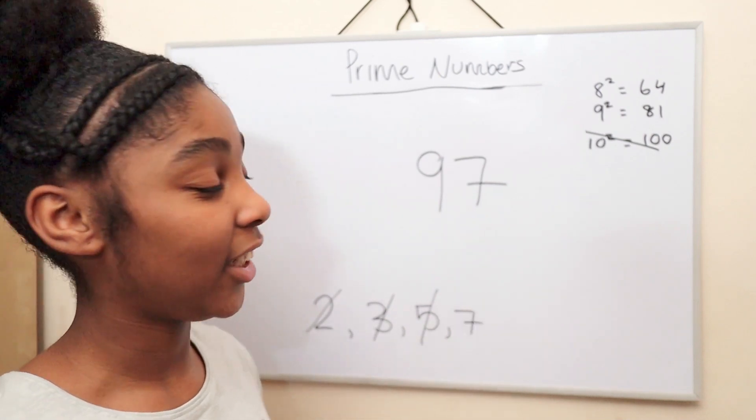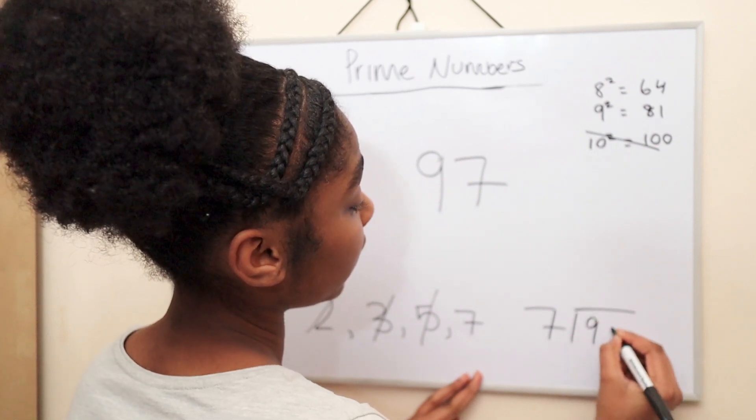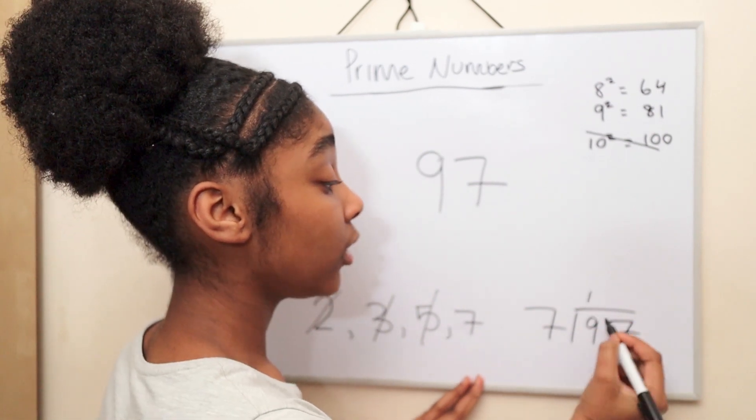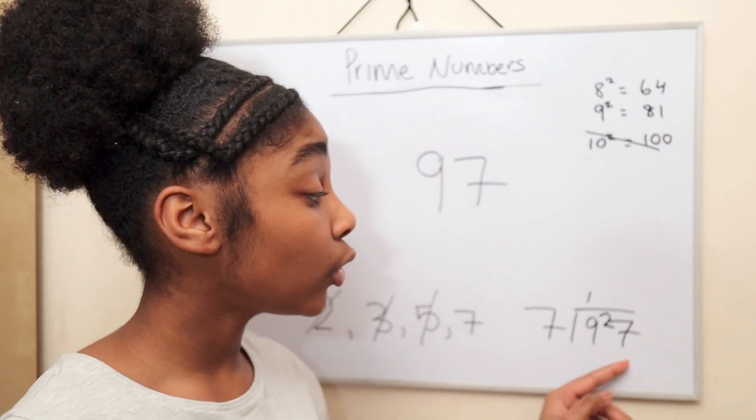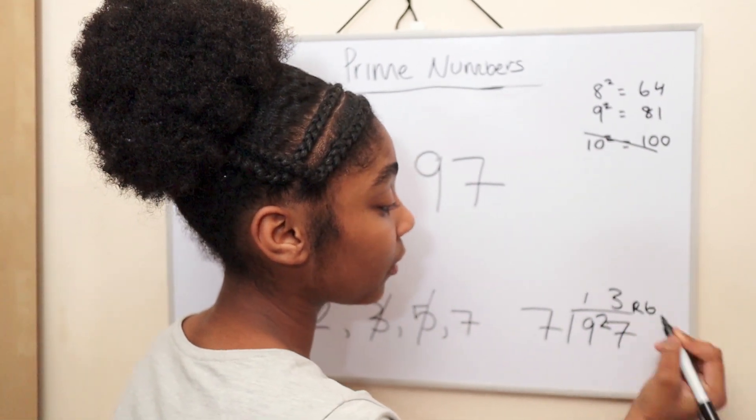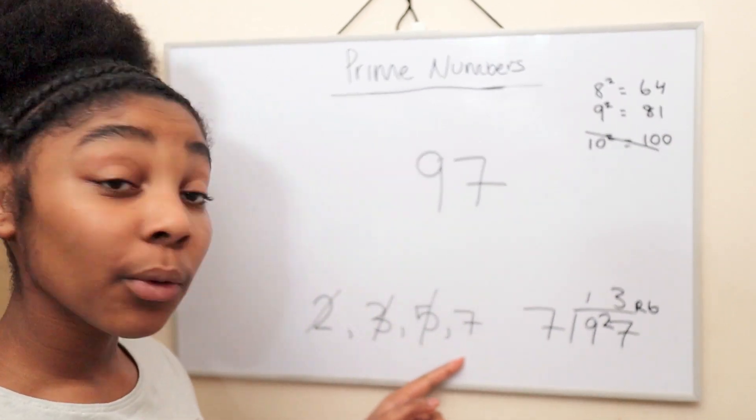Can 7 go into 97? Well, let's see. 97 divided by 7. How many times is 7 going to 9? Once, remainder 2. How many times does 7 go into 27? 3 times, remainder 6. Oh, we're left with the remainder. So we can cross out 7.